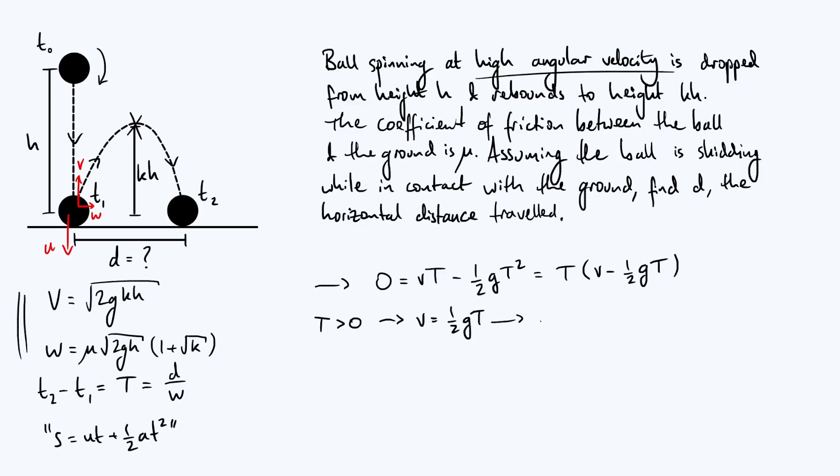So what we have to do is substitute a bunch of equations into V equals a half GT. So the left-hand side, which is just V, is of course going to become the square root of 2GKH. The right-hand side will keep our half G there. Then we're going to have a big fraction because it's distance over speed. So the numerator is of course just D. The denominator is W. So what I can do is just copy and paste this expression for W that we got earlier. So now we've made an equation that we can solve for D.